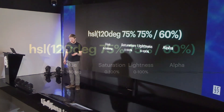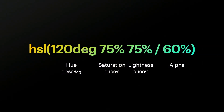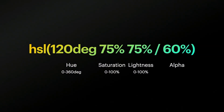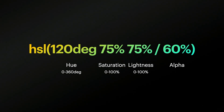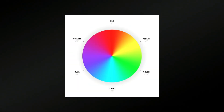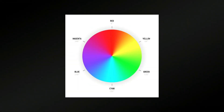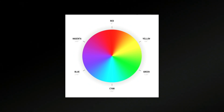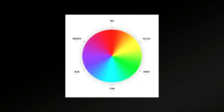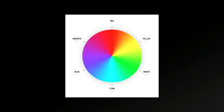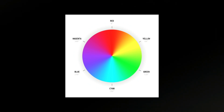The hue is a bit weird and non-intuitive at first, because what do degrees mean? Well, it refers to the color wheel, which goes from zero to 360 degrees, red being zero, yellow being 60, and so on.